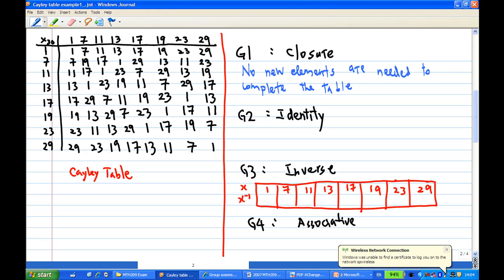Then for the second axiom, does this set together with the binary operation have an identity element? In this case we notice that the first row and the first column just repeat the border, so the identity element is actually 1. We can say that the first row and the first column repeat the element in the borders in order, therefore the identity element is 1, and we usually use e for identity element.